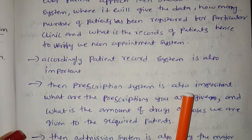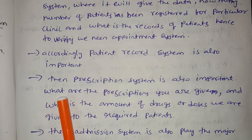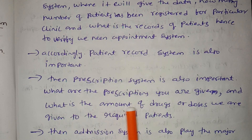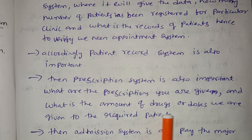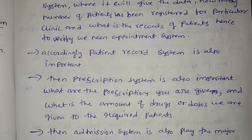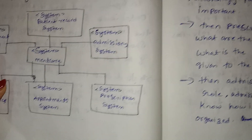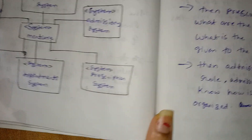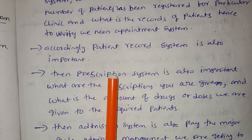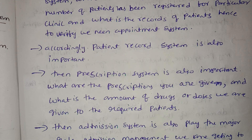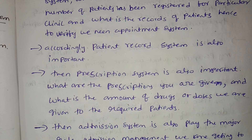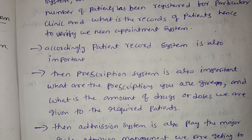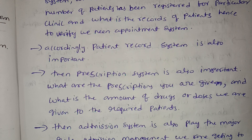A prescription system is also very important. It tracks what prescriptions are given and the amount of doses given to the required patients. Medical patients have their prescriptions managed through the prescription system.